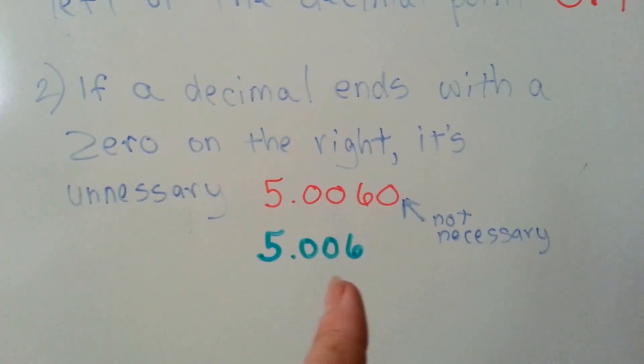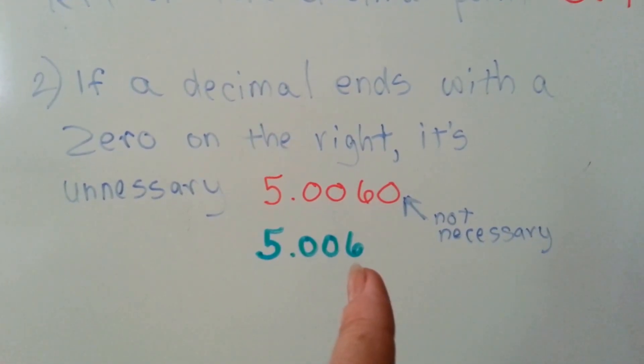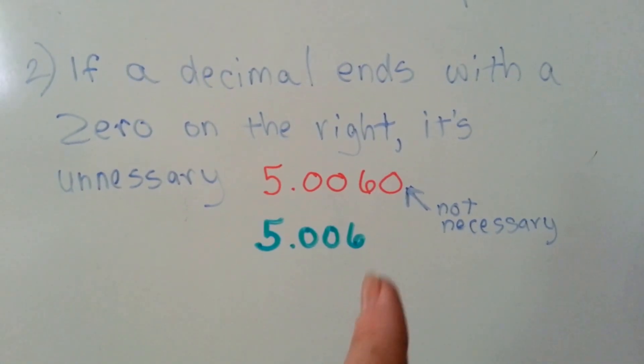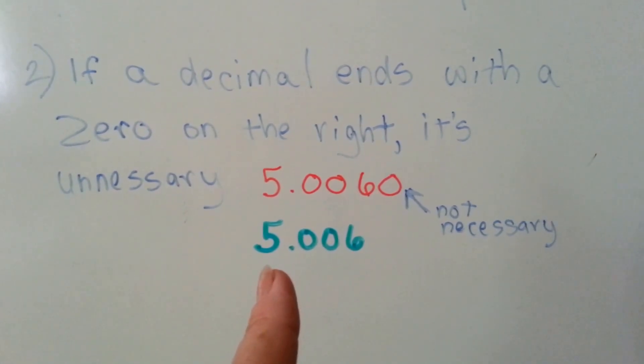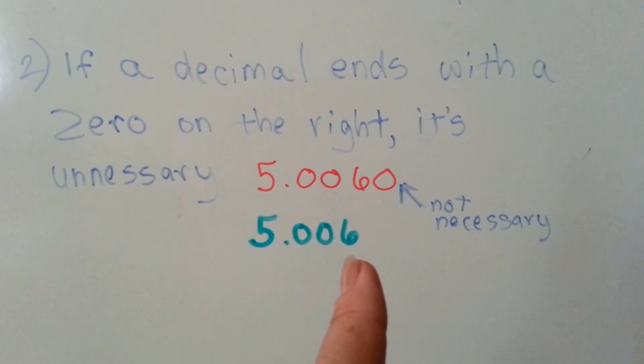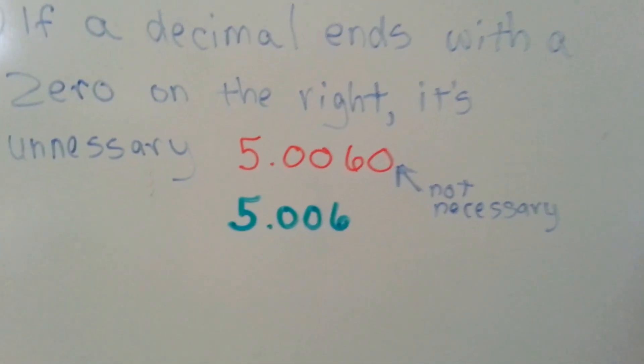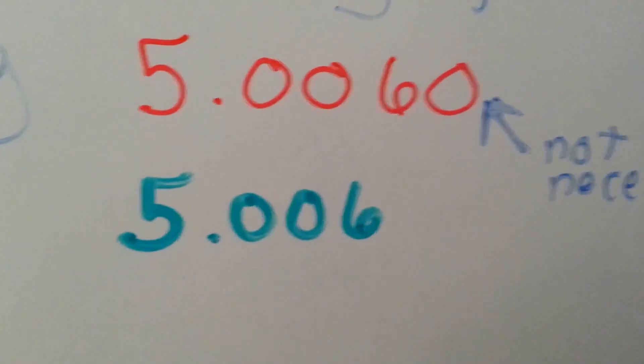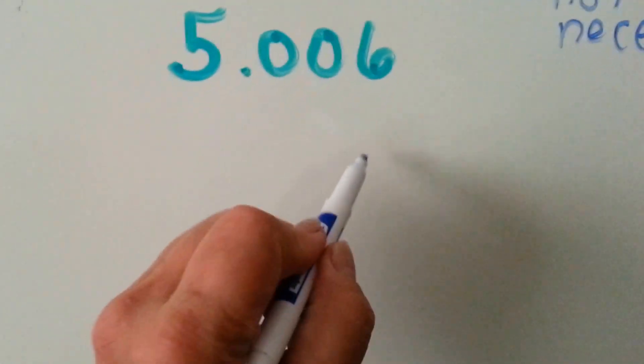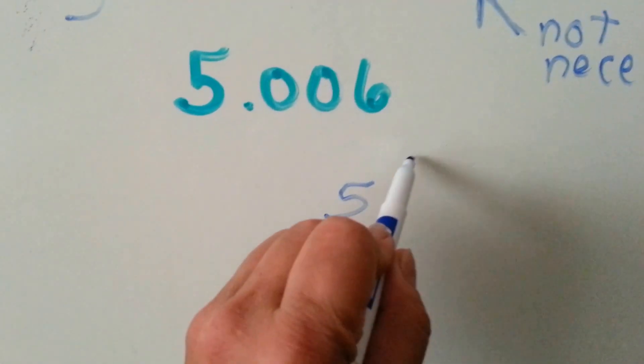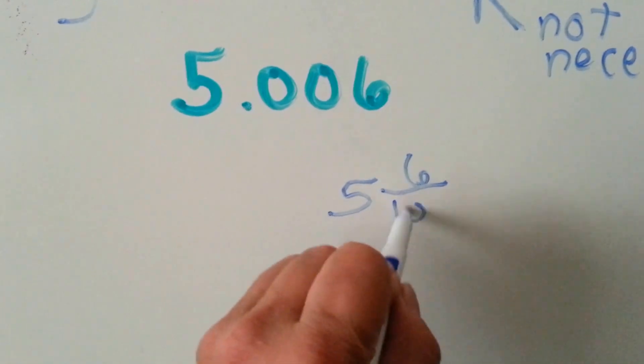It could be written like this. That six ends in the thousandths place, so this would be read as five and six one-thousandths.